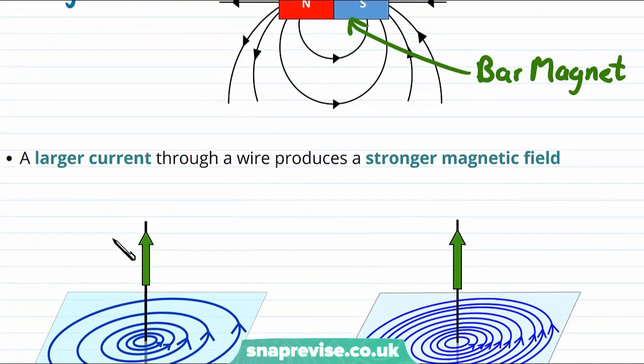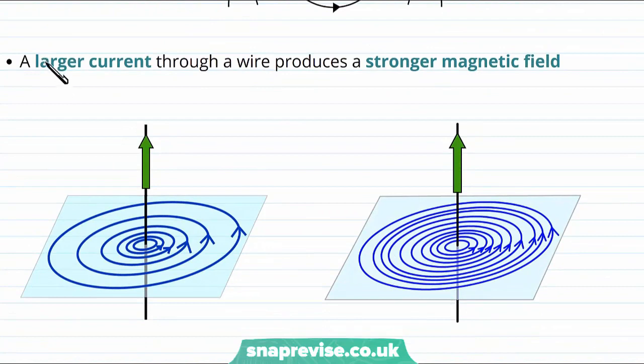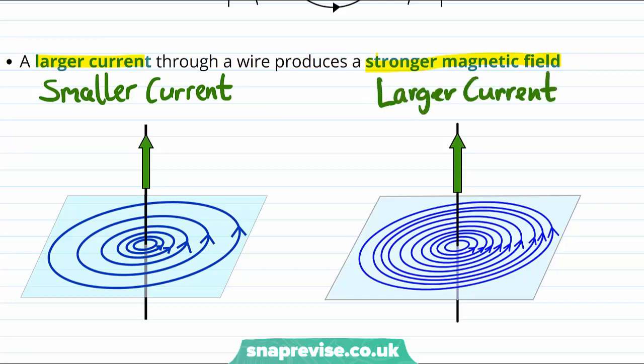Let's have a go at applying our knowledge in the case of the current carrying wire. In this case it turns out that a larger current through the wire produces a stronger magnetic field. So on the left we're looking at the example where we have a smaller current, and on the right hand side we're looking at an example where the wire has a larger current. And take a look at the separations of the field lines in these two cases. On the left hand side the field lines are further apart from each other than in the diagram on the right hand side. This means that the magnetic field produced by the wire with the larger current has a stronger magnetic field.